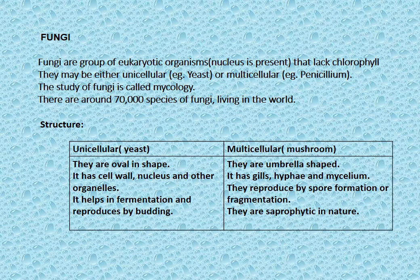Fungi are a group of eukaryotic organisms that lack chlorophyll. They may be either unicellular, like yeast, or multicellular. The study of fungi is called mycology. There are around 70,000 species of fungi living in the world. Unicellular fungal yeast cells are oval in shape. They have a cell wall, nucleus, and other organelles. Yeast helps in fermentation and is used in the bread and beverage industry.